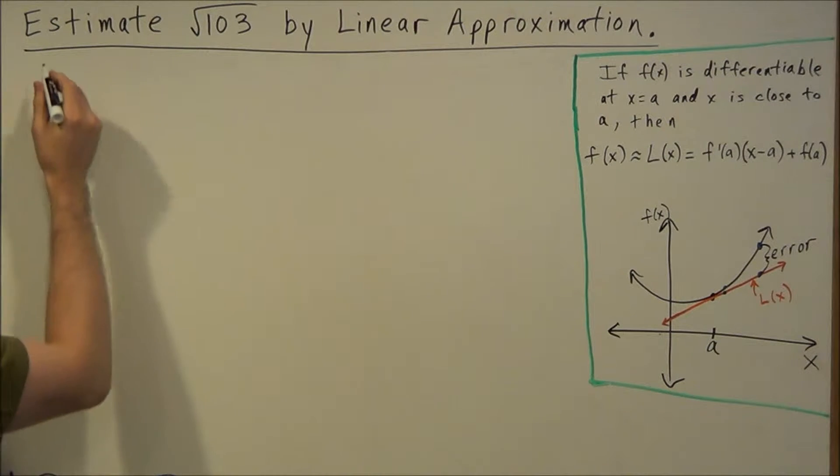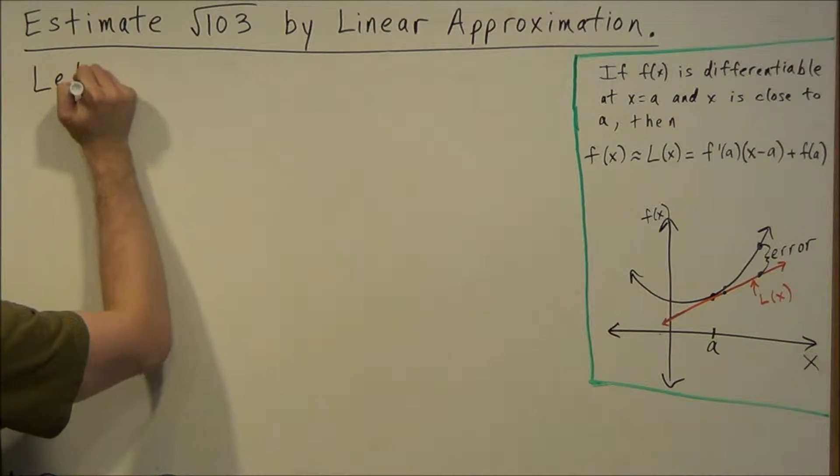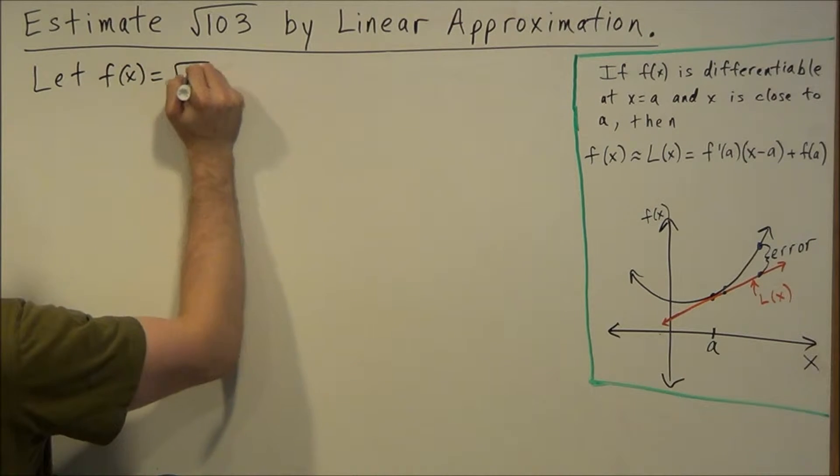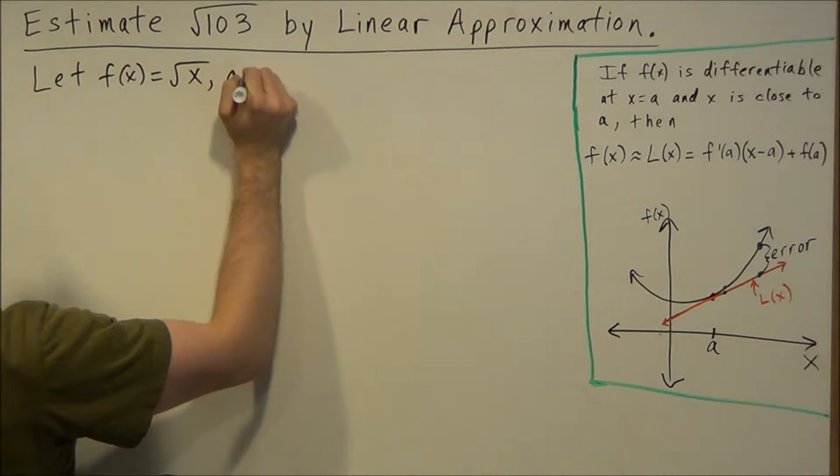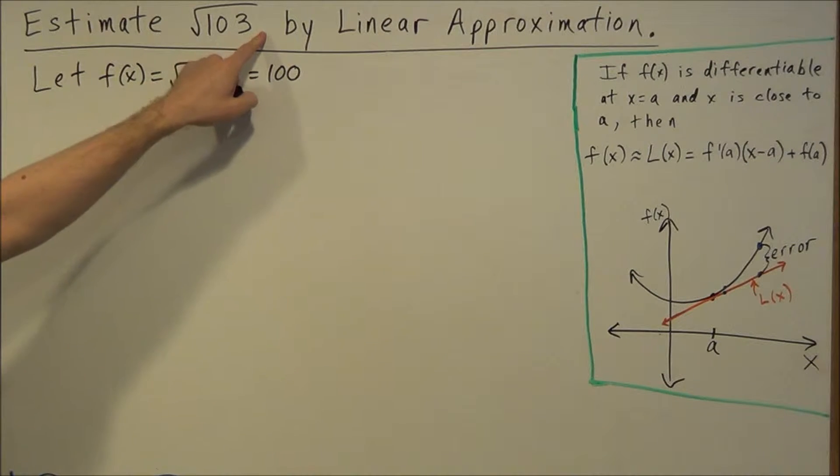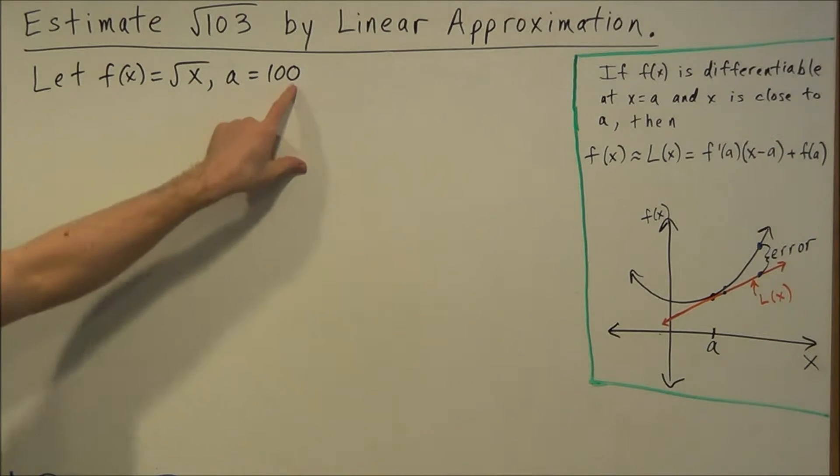So for this problem here, we should let f(x) equal square root x and we'll let a equal 100, because the square root of 100 is very close to the square root of 103. The next perfect square would be 121, but that's way too far away compared to 100.